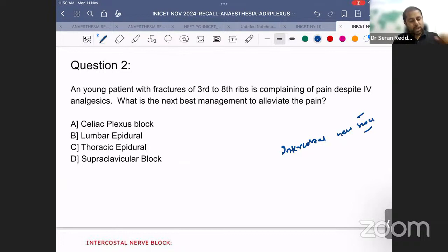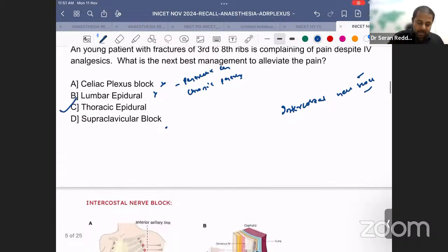So we need to apply the knowledge we learned. Celiac plexus block - where do we use? At the level of L1 for pancreatic cancer, CA pancreas, chronic pancreatitis. Lumbar epidural - we are speaking about ribs from 3rd to 8th, so lumbar epidural is a wrong option. Supraclavicular block is a way to block the brachial plexus, used for upper limb surgeries and hand surgeries. The answer remaining is thoracic epidural. By putting thoracic epidural, you can decrease the pain of 3rd to 8th ribs. This is the correct answer.